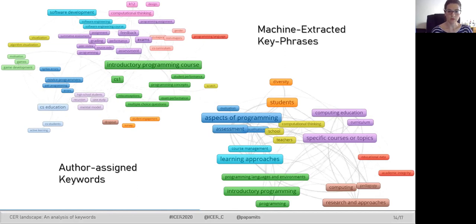Regarding the author-assigned keywords, topics that were identified as significant are the specific courses or topics, the learning approaches, aspects of programming, and programming languages and environments. Comparing the two keyword networks, we see that while introductory programming dominates the machine-extracted keywords, it is also central and very popular in the author-grouped keywords.